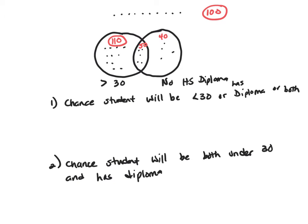All right. So the first circle, which I'm going to just highlight in yellow, those are people older than 30.